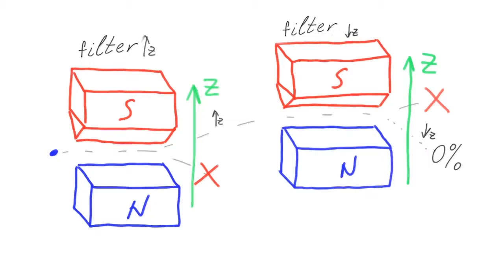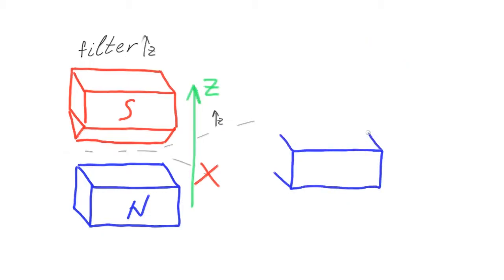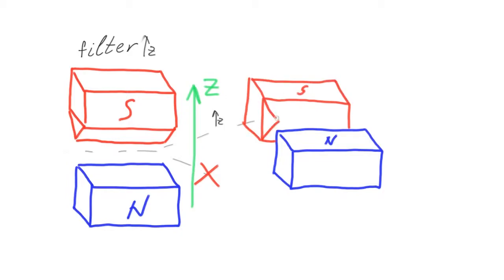So if the spin is up along the z-axis, then it is definitely not down along the same axis. Everything is quite logical so far. It is interesting to see what happens if we place one device oriented along the z-axis and the second one oriented along the perpendicular x-axis.